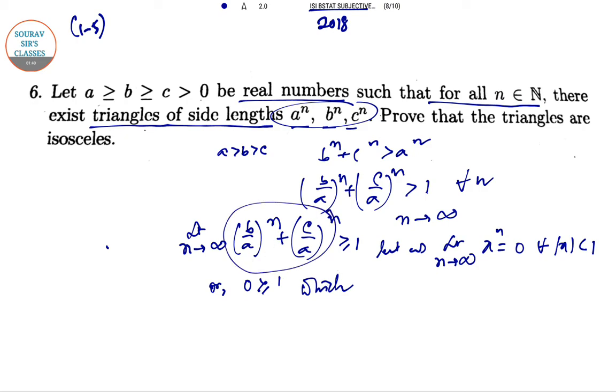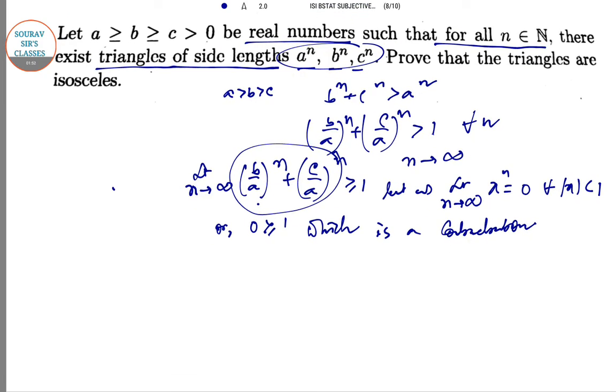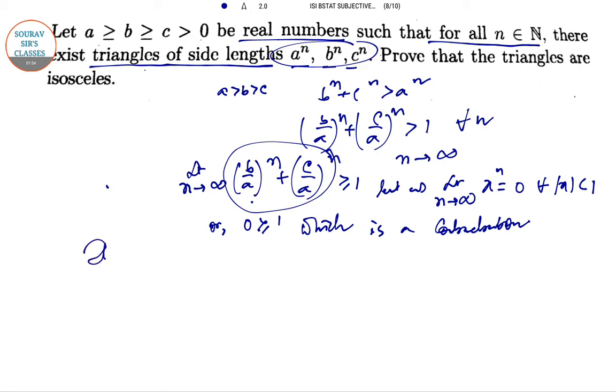So 0 ≥ 1, which is a contradiction. Hence the triangle is isosceles.